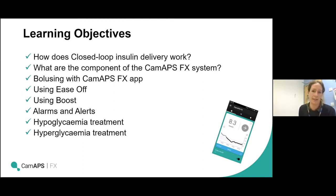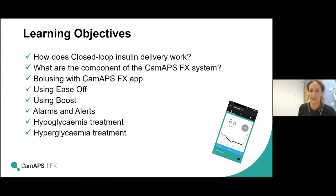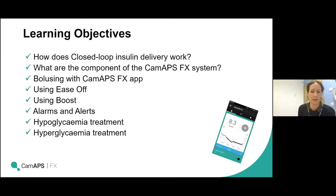Some of the things we want to take you through today are: understanding what a closed loop system is and how it works; what the components of the CAM APS FX closed loop system are; how to bolus or give insulin with the CAM APS FX for meals; how to recognise when certain functions — ease off and boost — can be utilised; the importance of alarms and alerts; and how to manage high and low blood glucose levels, and how this might differ from usual type 1 diabetes management.